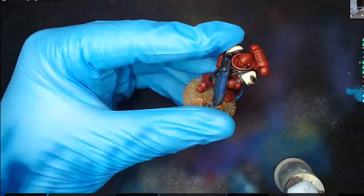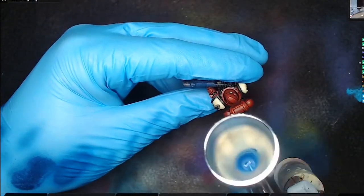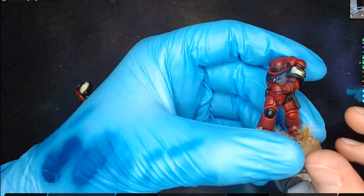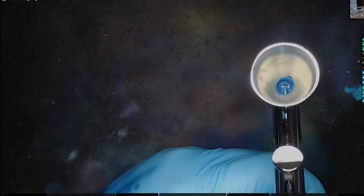So then on this Primaris Marine, what we're going to do is again once you've sprayed the gun, you can place it on the model and then you can kind of spray where the light would be coming from, as you can see there.